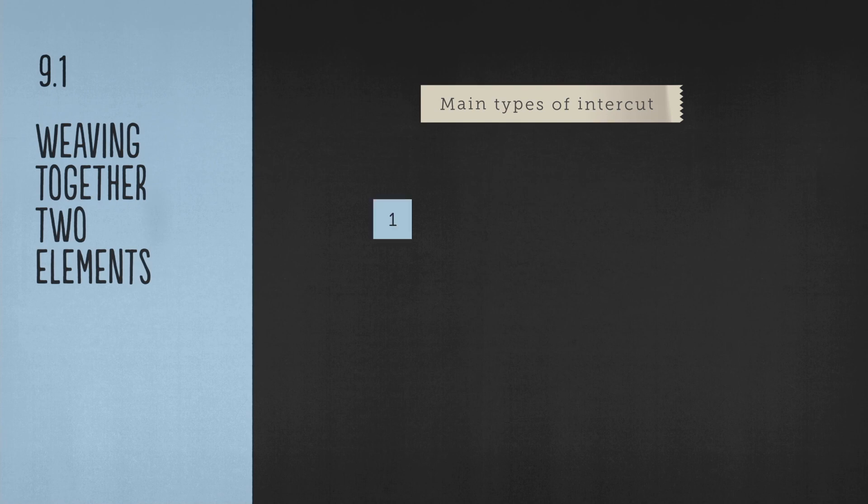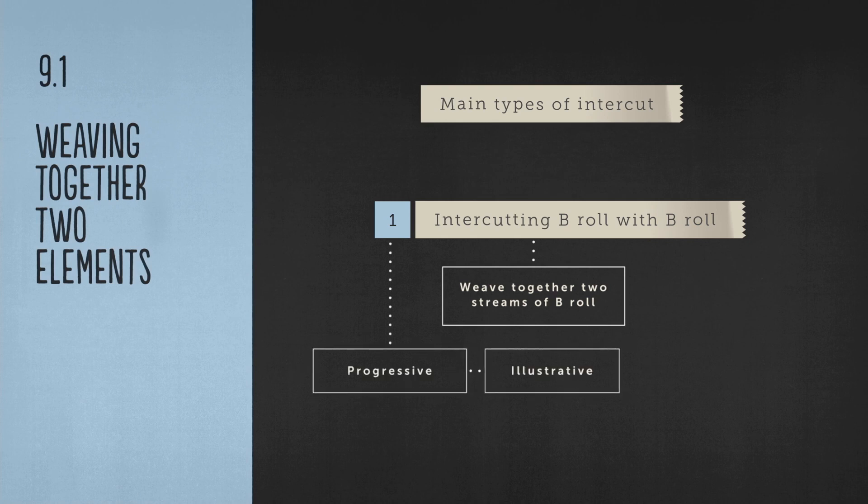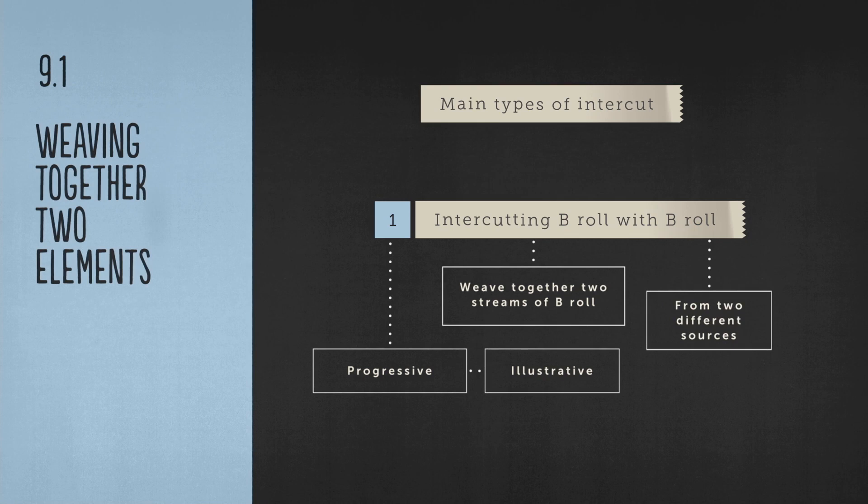Number one. Intercutting B-roll with B-roll. We often weave two different strings of B-roll together in TV scenes. We take progressive or illustrative B-roll shots from two different footage sources and slot them together one after another on the timeline.